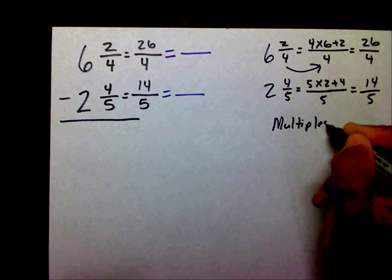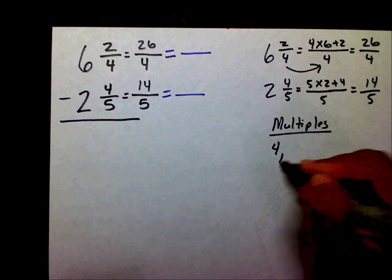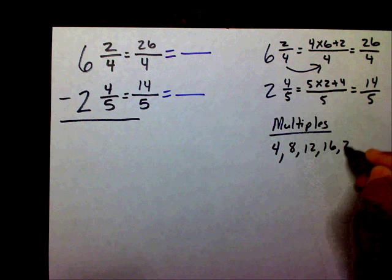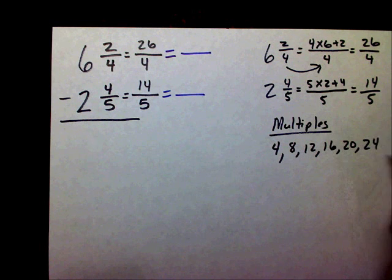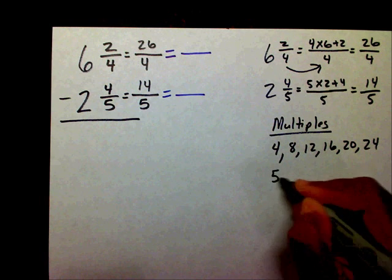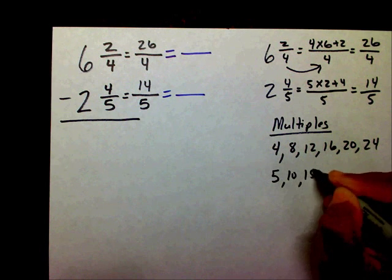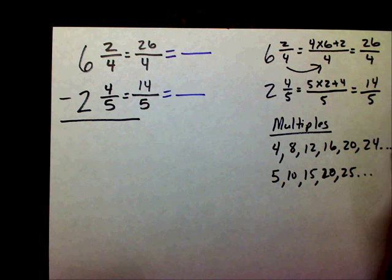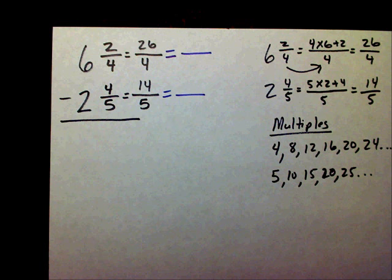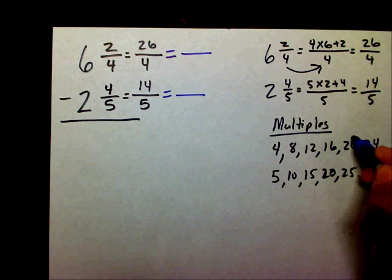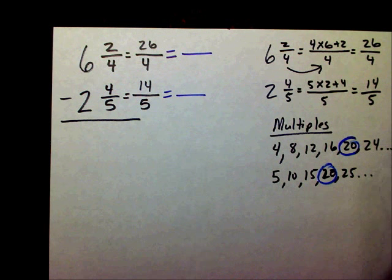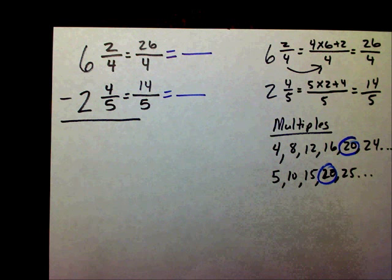My multiples of 4 are: 4, 8, 12, 16, 20, 24. My multiples of 5 are: 5, 10, 15, 20, 25, and so on. What multiples do they share? They share 20. The least common multiple — the smallest multiple they share — is 20. So that's going to be our new denominator.